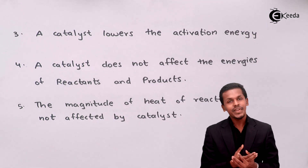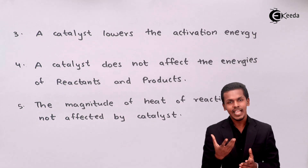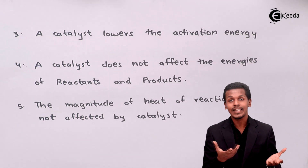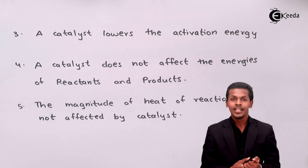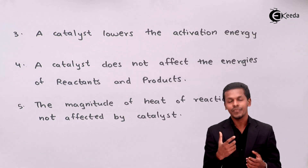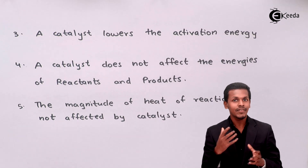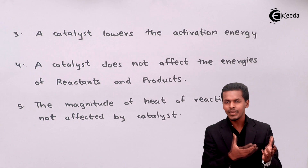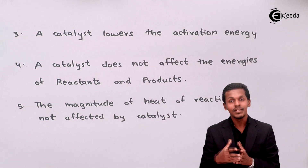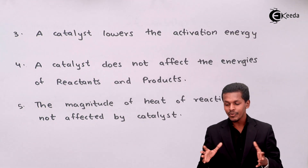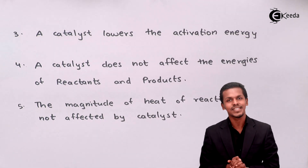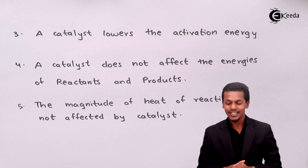A reaction can be exothermic or endothermic. The energy gap between the reactant and the product is known as the heat of reaction, which can be positive or negative. This heat of reaction cannot be altered by the catalyst, and the whole point will be clarified with the help of a graph.